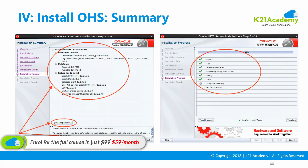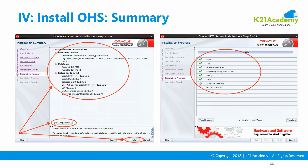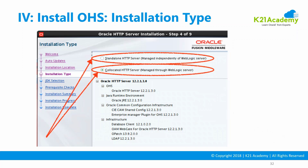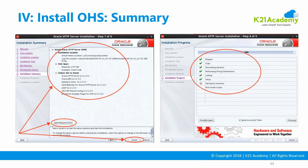The installer will install Oracle HTTP Server, the LDAP client, and also WebGate — you can see these in the feature sets on the left-hand side. You can also save a response file: whatever options you've selected can be saved and used later for a silent install. In a silent install, instead of being prompted interactively, you pass the response file at install time so everything happens automatically.